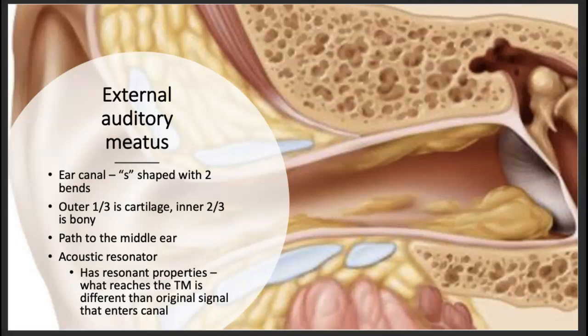So the ear canal, or the external auditory meatus, is S-shaped. When you do an otoscopic inspection and you look in there, sometimes you have to pull the ear up and back a little bit to be able to see straight back to the ear canal. I think that's a protective function so nothing can pierce the eardrum through the ear because it has bends in it.